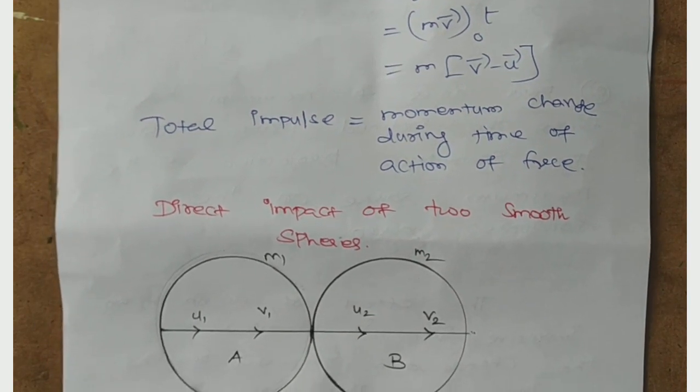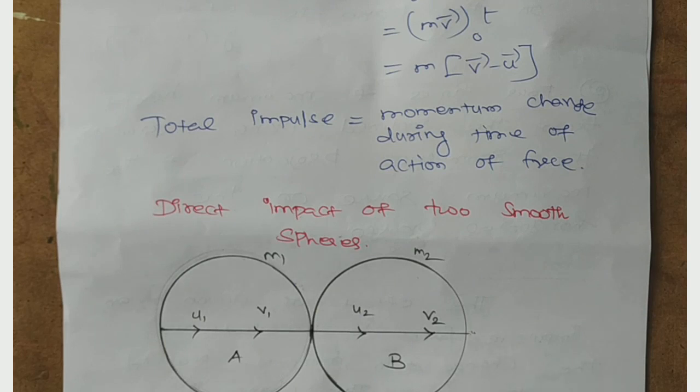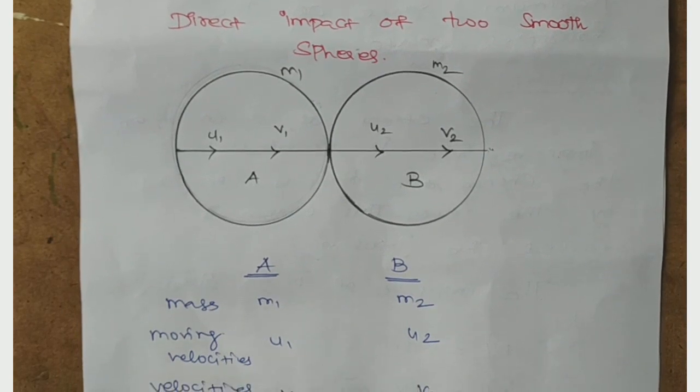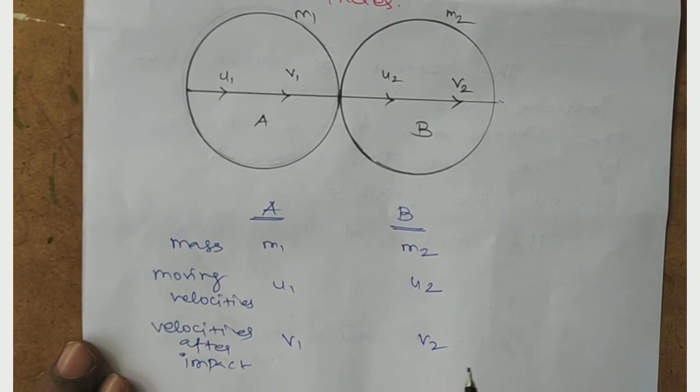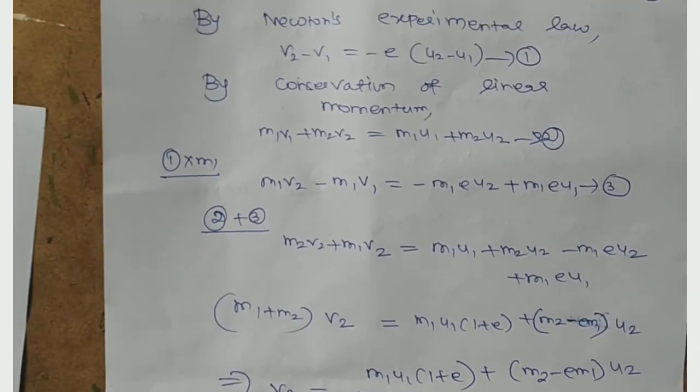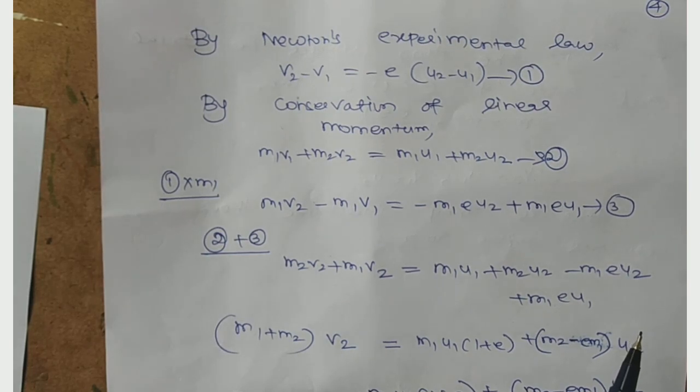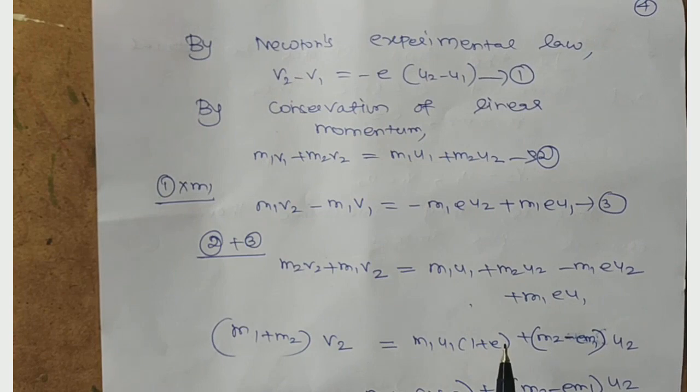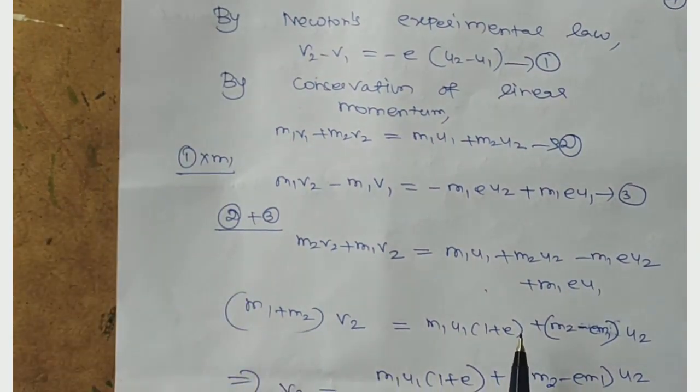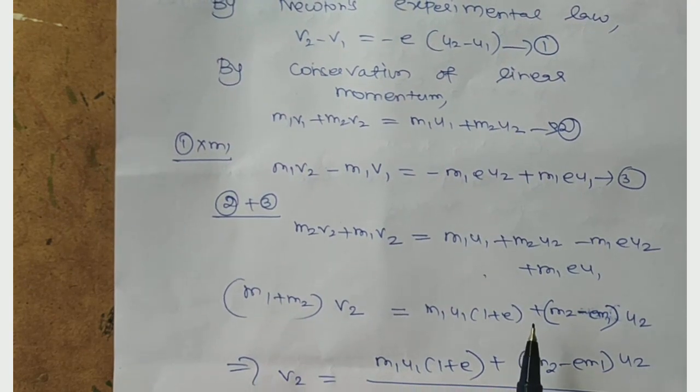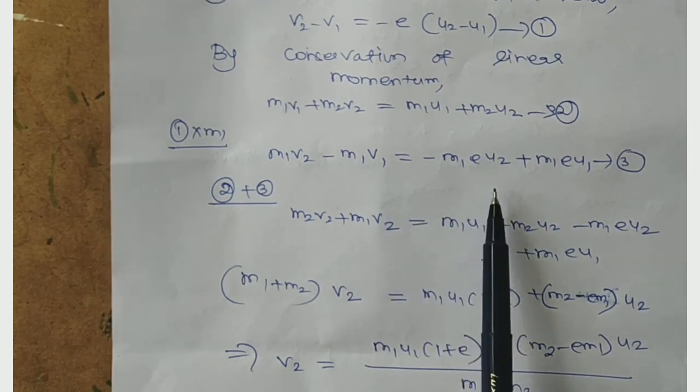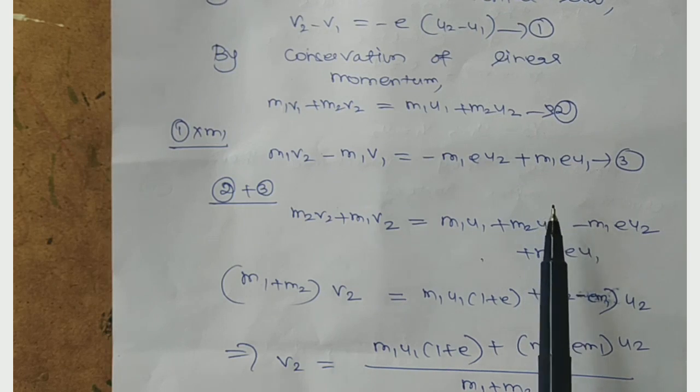Impact of two small spheres, like M1, M2, with velocities U1, U2 moving. After impact, velocities are V1, V2. By Newton's experimental law, V2 - V1 equal to -e(U2 - U1), this is equation 1. By the conservation of linear momentum, M1V1 + M2V2 equals M1U1 + M2U2.